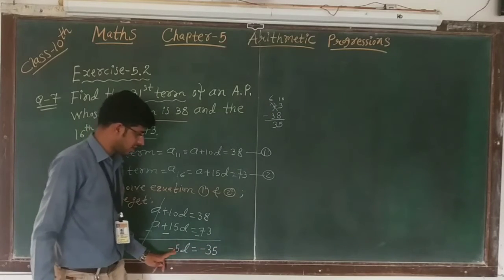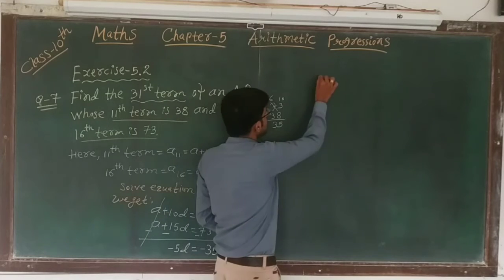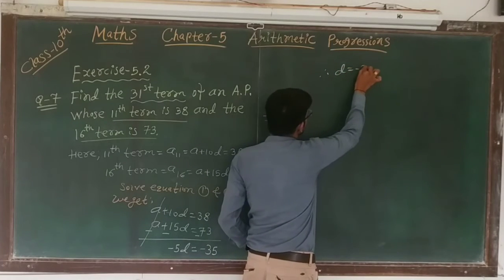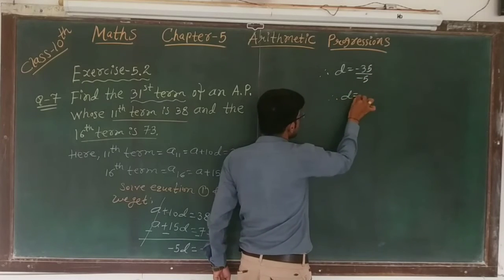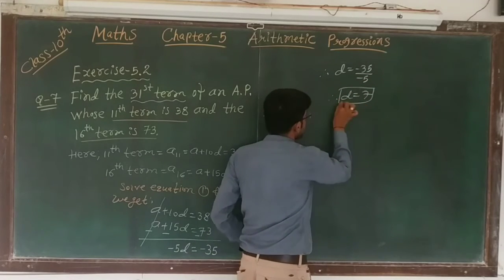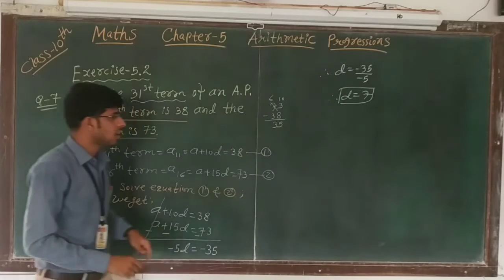Now we will shift minus 5d to the right side, so the value of d is minus 35 over minus 5. Therefore, the value of d is 7 because minus minus cancel out.